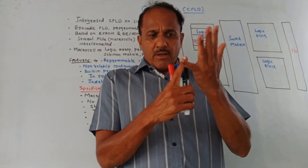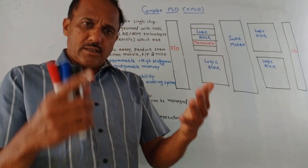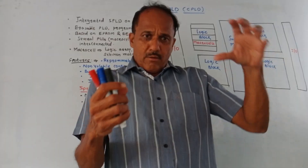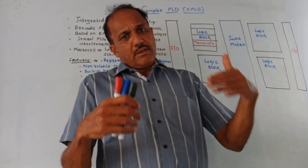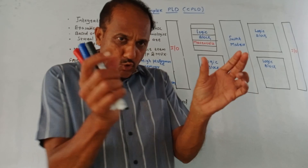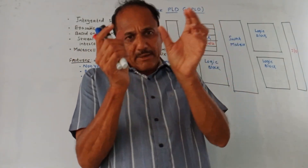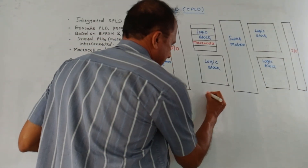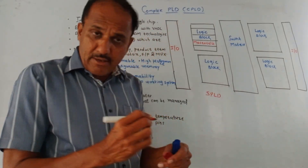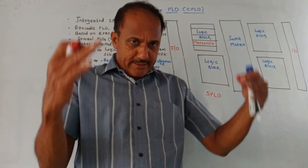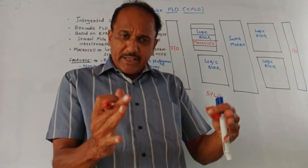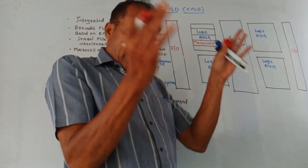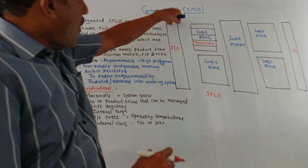What we have discussed earlier: we were using PROM, then PLA, then PAL and so on. But every technology is having certain limitations. So PROM, PLA and PAL can be combined together to form SPLD, that is Simple Programmable Logic Device. But if the application is complicated, then depending on the requirement, many times it is required to make use of a number of SPLDs in a single IC package — that is called Complex PLD.